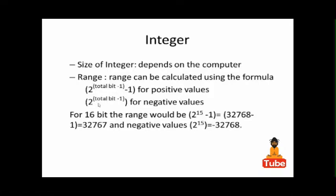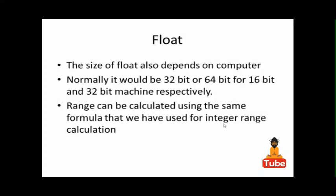For negative values, it is 2^(total bit - 1). So for 16-bit architecture, it will be 2^15 - 1, which is 32,768 - 1 = 32,767 for positive, and 2^15 = -32,768 for negative values.